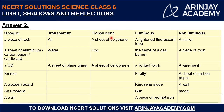Then comes translucent materials. A sheet of polythene — have you ever tried looking through a sheet of polythene? You can see objects on the other side, not as clearly, but still you can. Such materials are translucent. Then fog — we observe fog in the early morning, and you can see some objects on the other side through it.